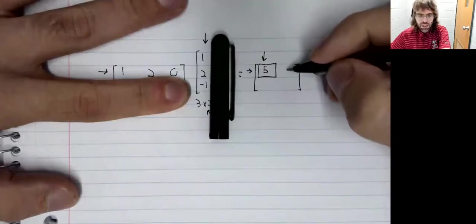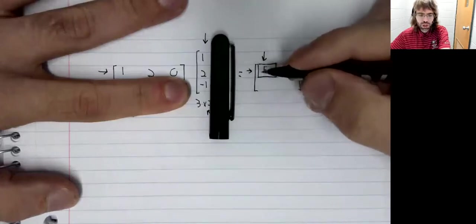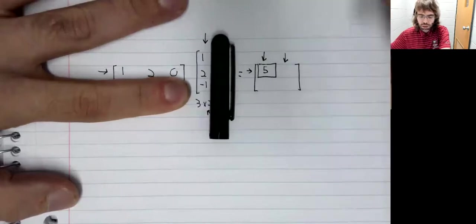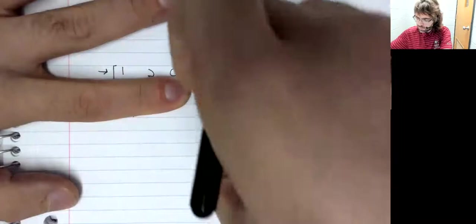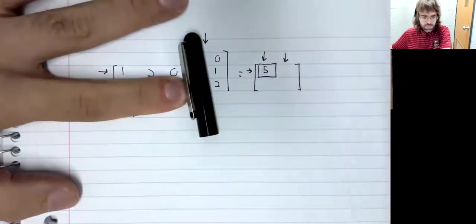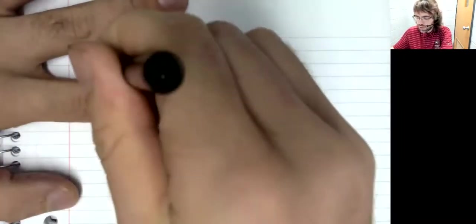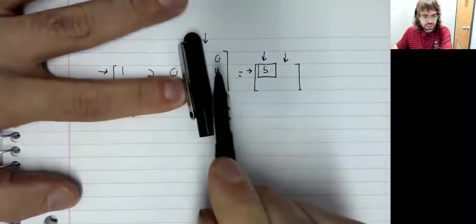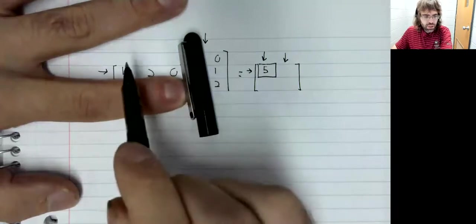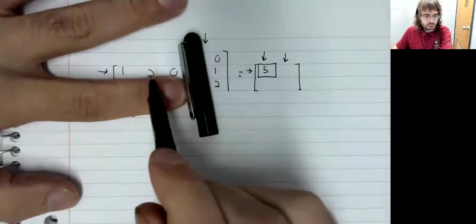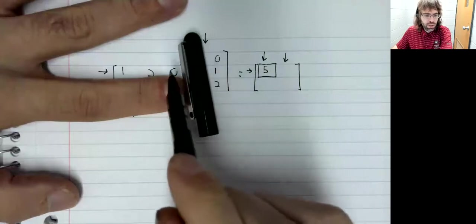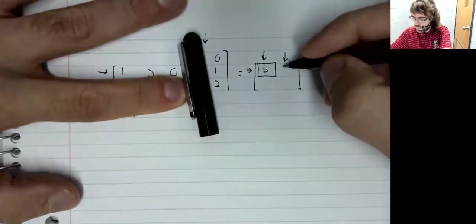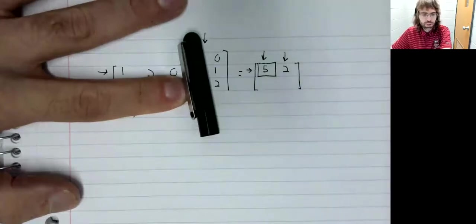What about here? Well, this is the first row, so we'll look at the first row and the second column. And we'll get zero, two, zero. Add those up to two.